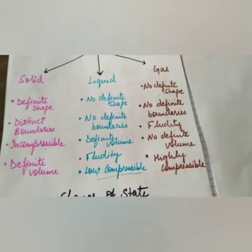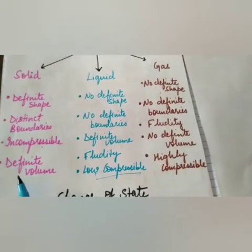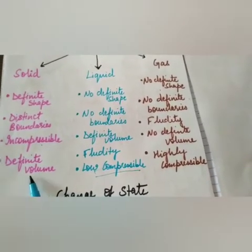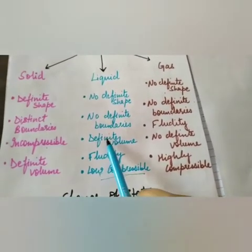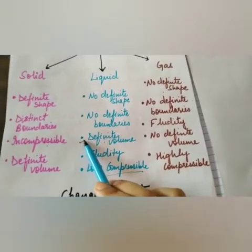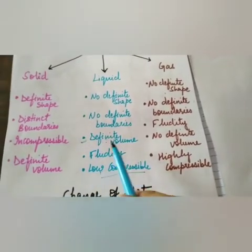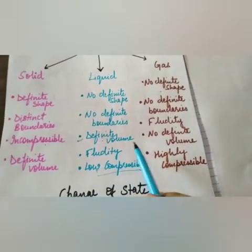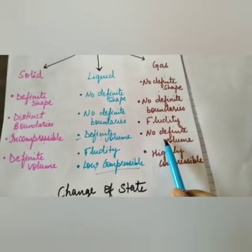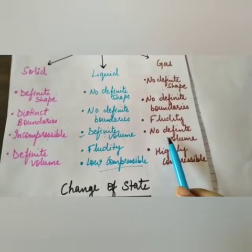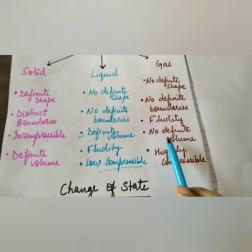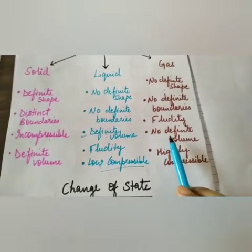Next is definite volume. Solid has definite volume. Liquid also has definite volume. But gas does not have a definite volume — gas takes the volume of the container in which it is kept, so it does not have a definite volume.